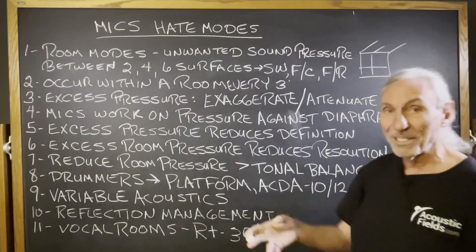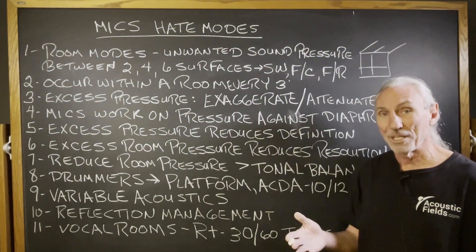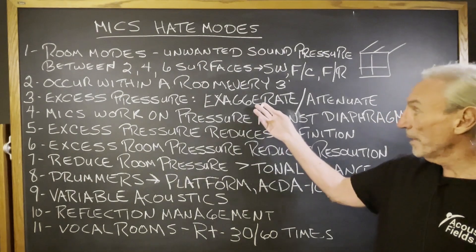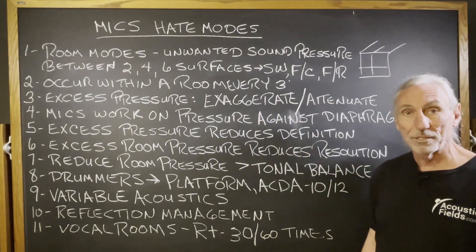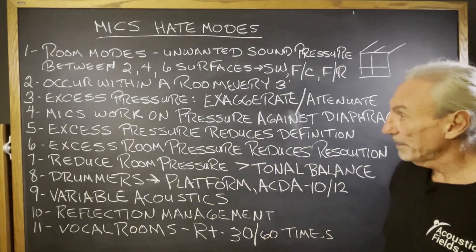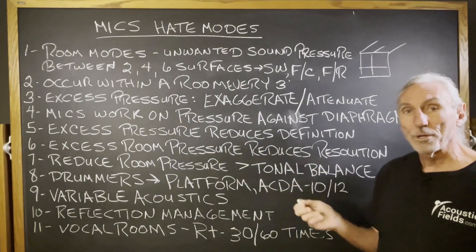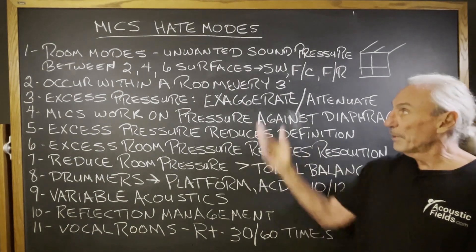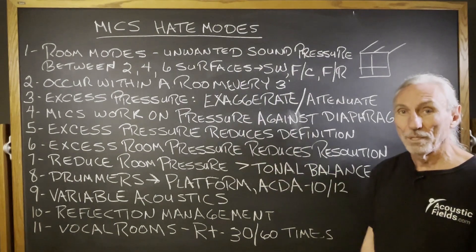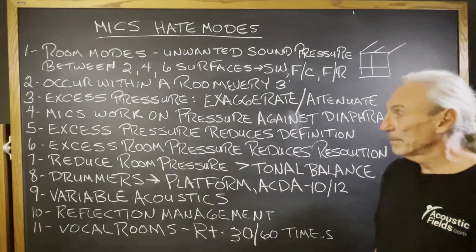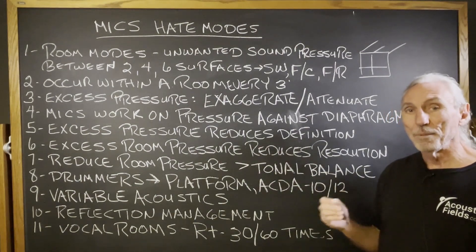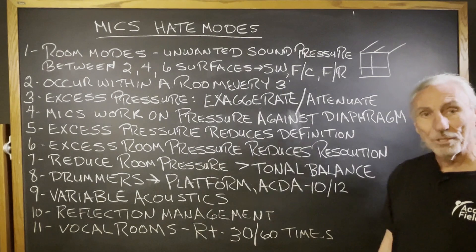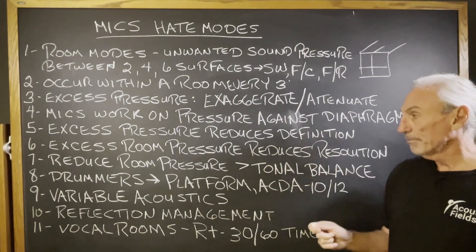Excessive pressure from modes causes exaggeration and attenuation — that's the last thing we want our microphones to hear. We want them to hear everything, maybe just a little bit of the room, but definitely not a modal problem. We don't want any exaggeration and we don't want any signal loss. We're trying to capture everything — the fundamental and the harmonics. Microphones work on pressure, sound pressure against the diaphragm. So if we're adding pressure with modes into a room, we have to manage that pressure carefully because we want resolution too. Excess room pressure is going to reduce resolution.